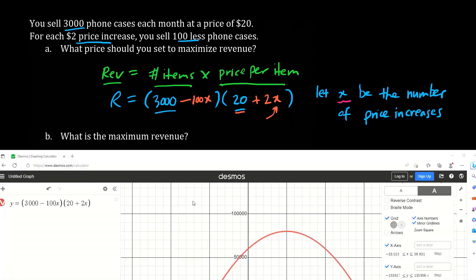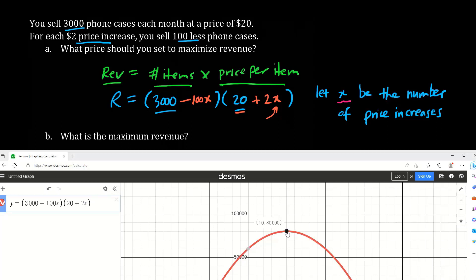Let's use Desmos. Notice how this equation is a parabola. We punch it in here and we realize that there is a vertex. The revenue value is equivalent to the y value. The revenue is the y value here, which is $80,000. So when x is 10, we have the maximum revenue, which is $80,000.